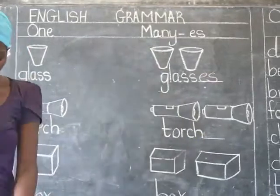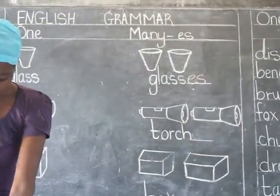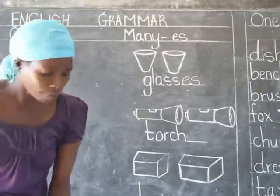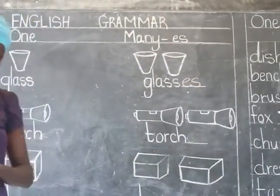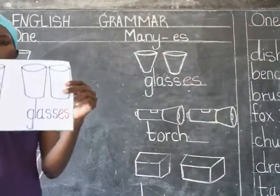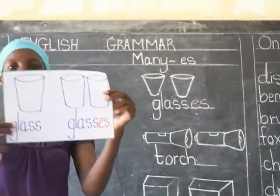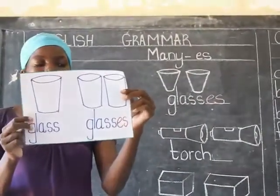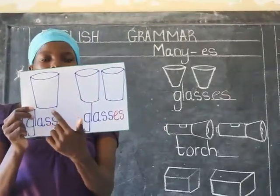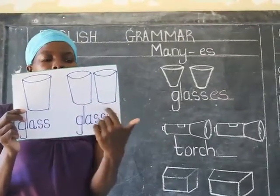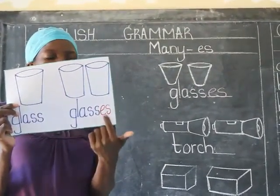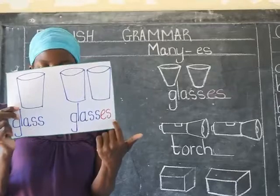I have a flashcard of the same. So I have here: glass, glasses. One glass, two glasses. I have added E and S.